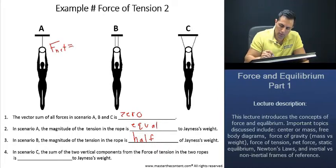And we know that because force net is just going to be 2T, for two forces of tension, plus the force of gravity, which is also Janus' weight, which is equal to 0. And then tension is just going to be half of Janus' weight.